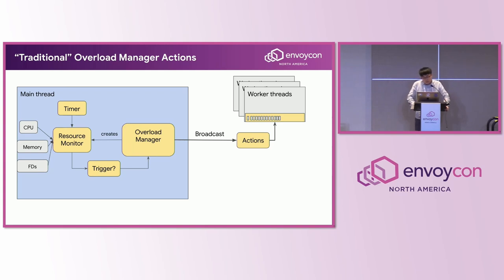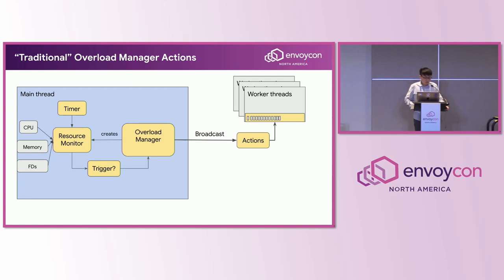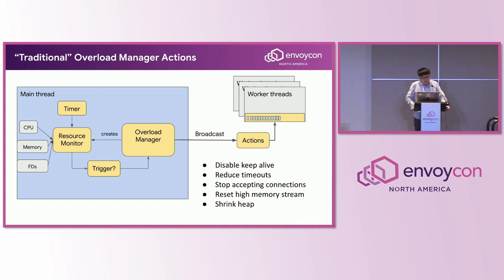So here we want to improve our situation. I want to briefly introduce the overload manager in Envoy. This diagram shows the critical components in the overload manager, including resource monitors and different actions. We can monitor the CPU, memory, and network usage, file descriptors, and so on. With a specific threshold, when that threshold is reached, overload actions will be posted to the event queue in the worker thread. These are traditional overload manager actions, and they include things like turning off keep-alives, shorting timeouts, resetting high memory streams, or shrinking the heap, and more.